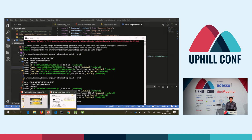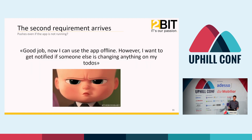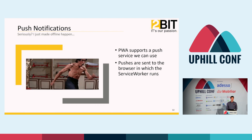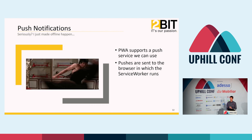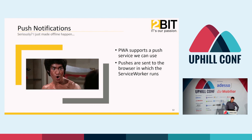Let's go back to the requirements. We've now made it so we get notifications about updates and we can do the offline thing — we completed this first requirement. But as always, when you meet the first requirement, new ones pop up. It's like: okay, it's nice that we can work offline, but I want to get notified if someone else is changing any to-do item.